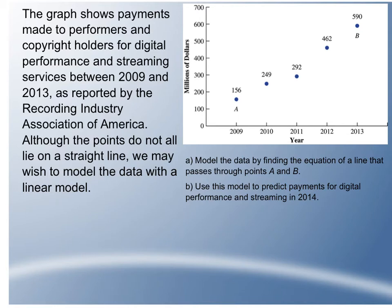So here's our example where we're going to do this. The graph shows payments made to performers and copyright holders for digital performance and streaming services between 2009 and 2013, as this was reported to the Recording Industry Association of America. The points you can check, they are not all on a perfectly straight line. But we're going to model them with linear data in part A and use that to make a prediction about what's going to happen in 2014 in part B. They tell us in the problem to specifically use that point and that point to model this data. So what I want to start out with is writing down for point A, what are its coordinates. Point A is the year 2009, but we're going to say that that is year zero. So we're going to say that 2009 is year zero. That's how that works.